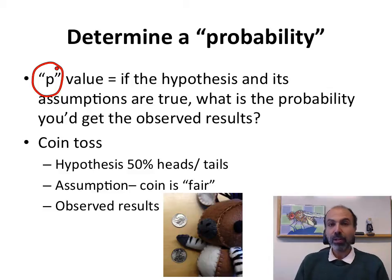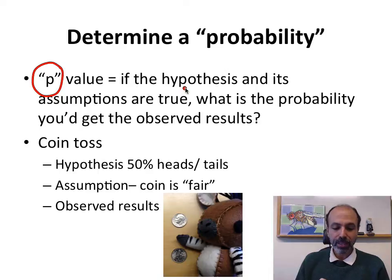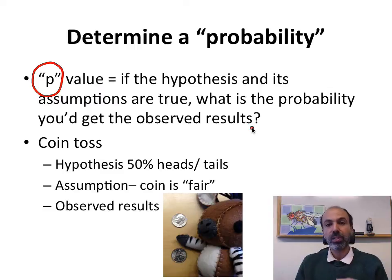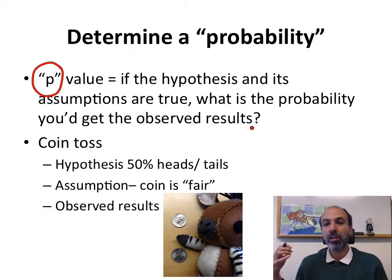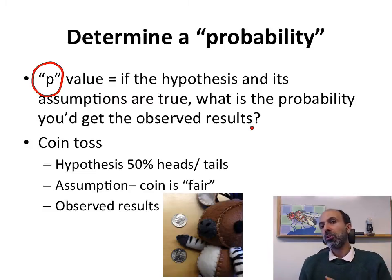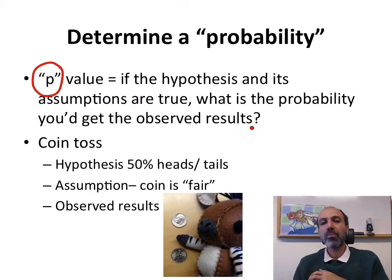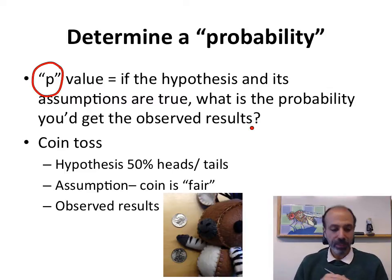The p-value, which just stands for probability, is essentially: if the hypothesis and its assumptions are actually true, what is the probability you get the observed results? So, if I was to call home and my wife doesn't answer, does that mean there's zero chance she's home? Does that mean there's a 10% chance she's home, 50% chance, etc.?